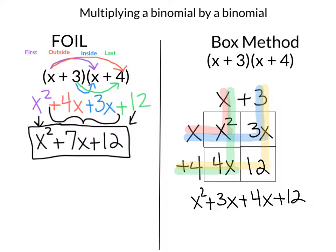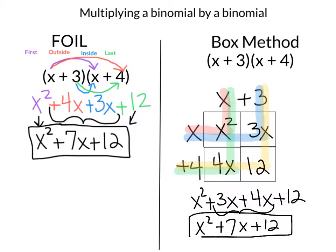And again, I can combine like terms. So I have X squared plus 7X plus 12. And if you notice, this problem has the same answer on the left side of the screen as the right — so either method works. Let's take a look at another problem.